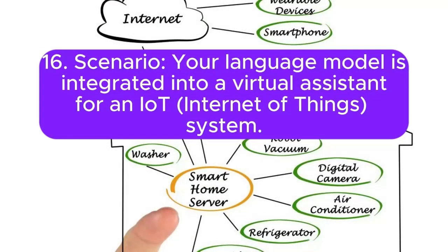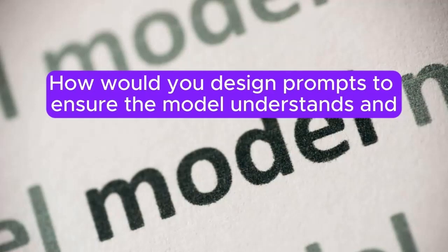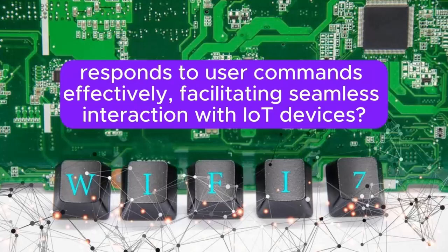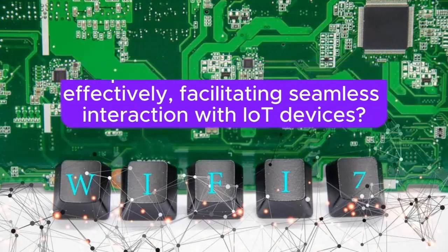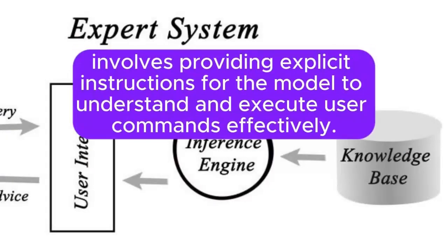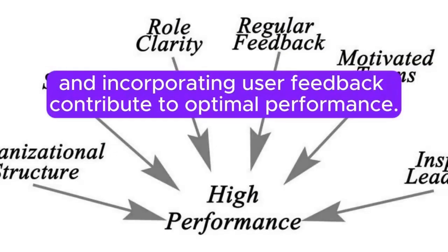Scenario 16: Your language model is integrated into a virtual assistant for an IoT (Internet of Things) system. How would you design prompts to ensure the model understands and responds to user commands effectively, facilitating seamless interaction with IoT devices? Answer: Crafting prompts for a virtual assistant in an IoT system involves providing explicit instructions for the model to understand and execute user commands effectively. Fine-tuning on task-specific prompts, experimenting with prompt structures for IoT interactions, and incorporating user feedback contribute to optimal performance.